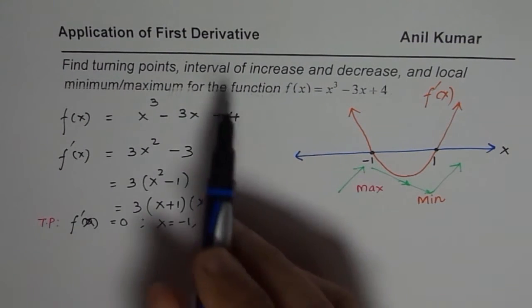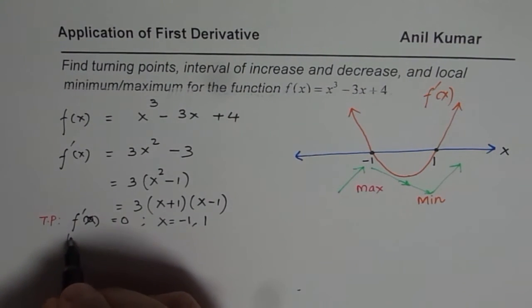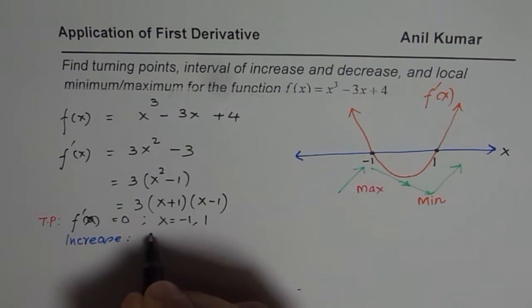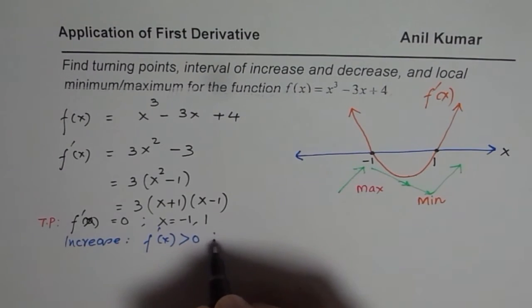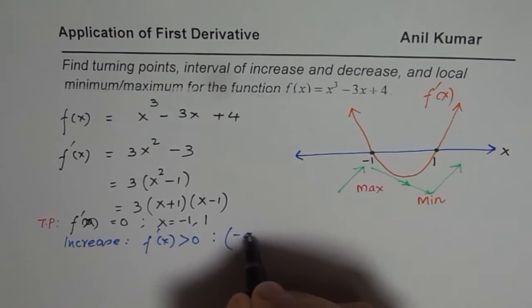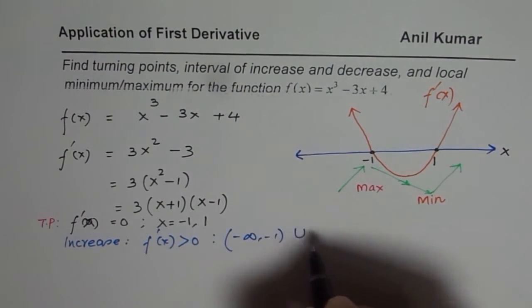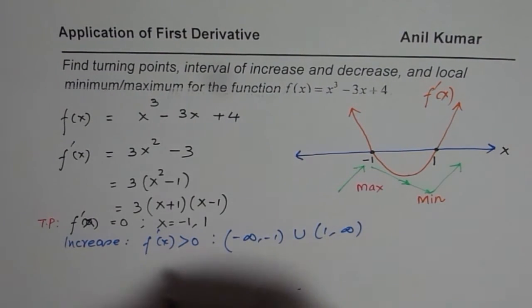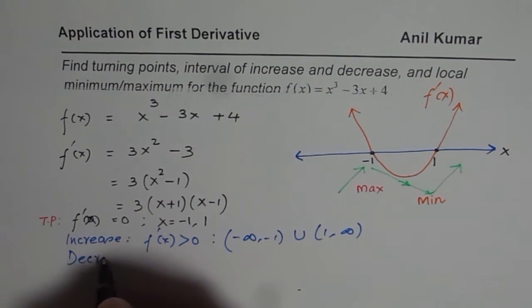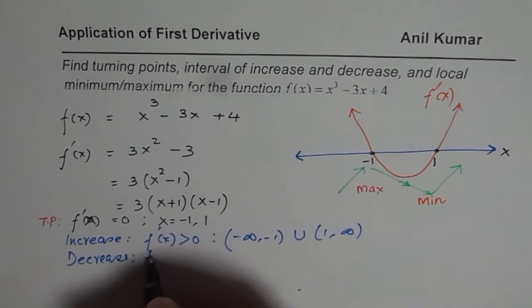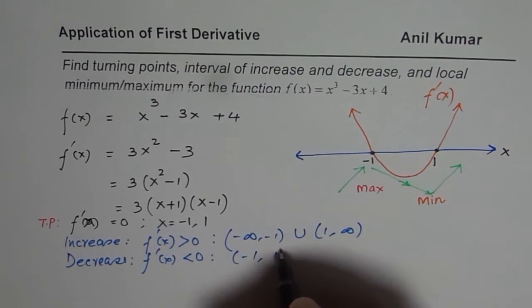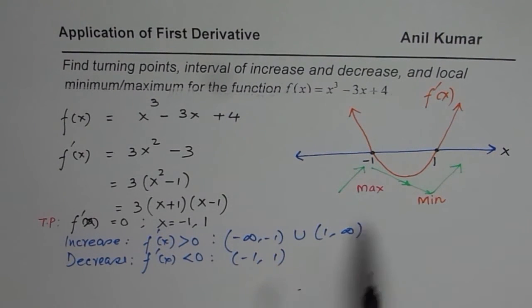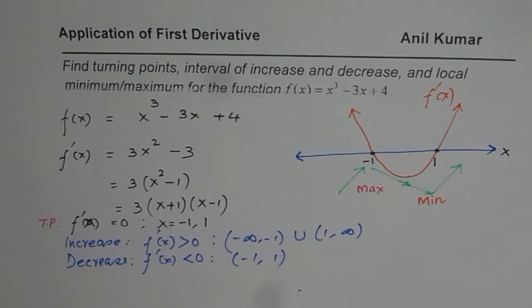From here we can find the interval of increasing. Increasing means where the derivative is positive, greater than 0. So the interval of increase is from (-∞, -1) and from (1, ∞). The interval of decrease is where the derivative is less than 0, which is between -1 and 1.